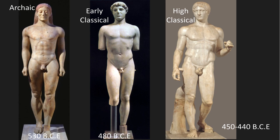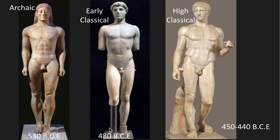Moving out of the Archaic period, there is one major big change: Contrapposto — the shifting of weight. This is Kritos Boy. He's not one of our 250, but he is the first example of Contrapposto we have. He is early Classical, about 30 years before our Doryphoros.